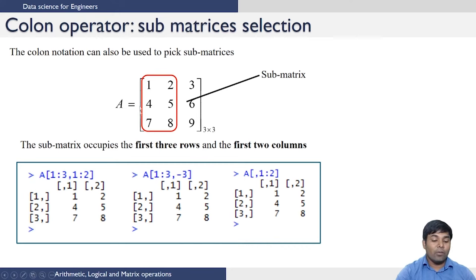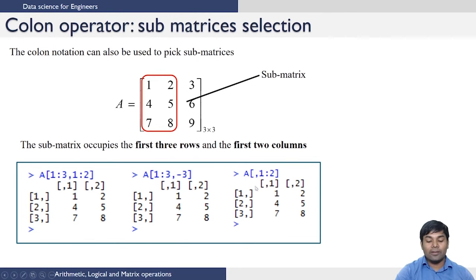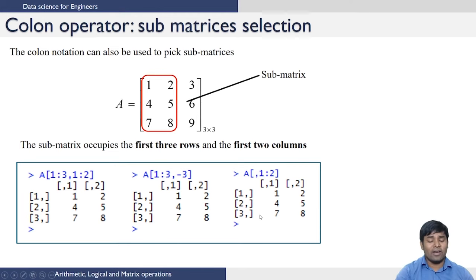For example, if you want to select a sub-matrix, you can use the colon operator. To access the first three rows and the first two columns of a matrix, you specify rows 1, 2, 3 using 1:3 and columns 1, 2 using 1:2. The colon operator helps in accessing sub-matrices from a matrix. Another example: to access all three rows but exclude the third column, you can use a negative sign. Or alternatively, you can access all rows but only from the first two columns. You can access sub-matrices in different fashions depending on which way you are comfortable with.